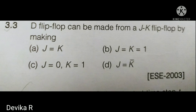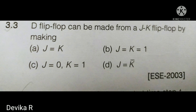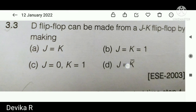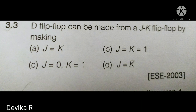Next: a D flip-flop can be made from a JK flip-flop by connecting an inverter between J and K, so that J = K̄. That is the right answer. Note: if they ask about a T flip-flop made from a JK flip-flop, then J = K. For a D flip-flop conversion, the answer is J = K̄.